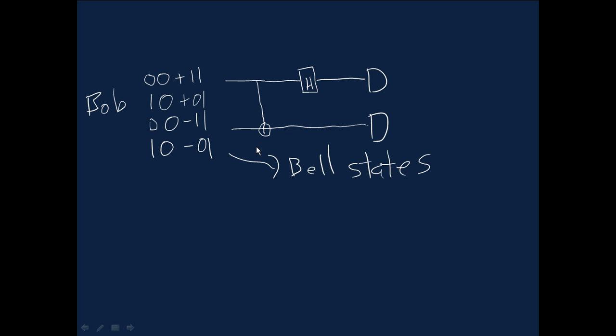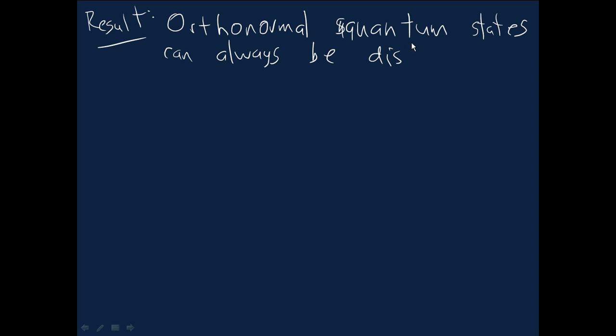And the reason an expert can do it is because of a particular result. And what the result says is that orthonormal quantum states, any set of them, like the Bell states, can always be distinguished from one another. They can always be told apart, in other words. And this is essentially the result that an expert is using when they think about the superdense coding protocol. So we'll prove this shortly, and I'll explain in a little bit more detail exactly what I mean.